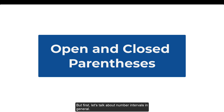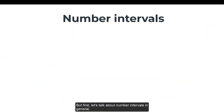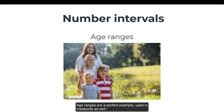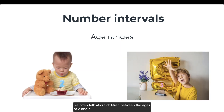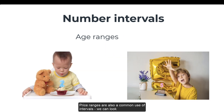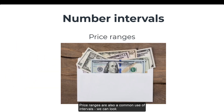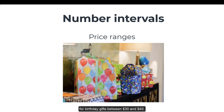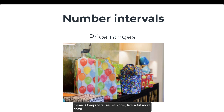But first, let's talk about number intervals in general. Age ranges are a perfect example used in measures as well. We often talk about children between the ages of two and five. Price ranges are also a common use of intervals. We can look for birthday gifts between $30 and $40. In general, most humans understand what those ranges or intervals mean.